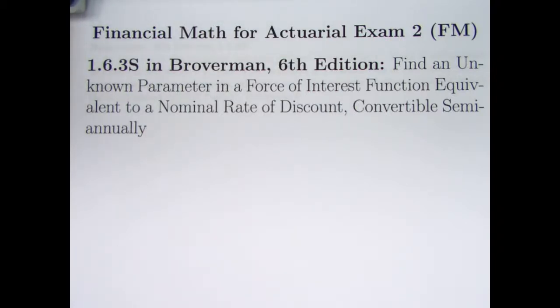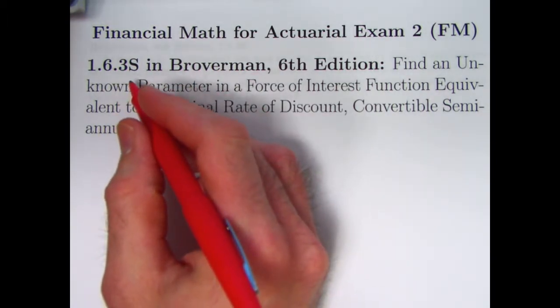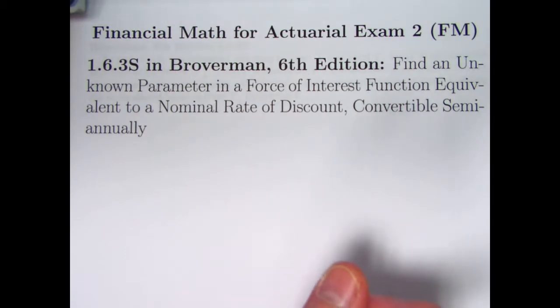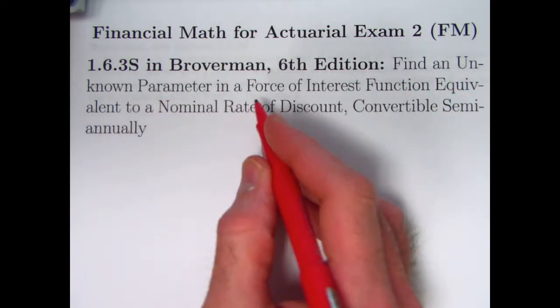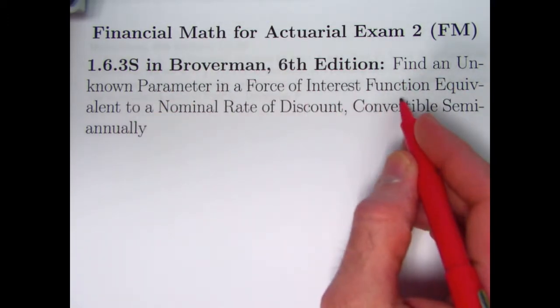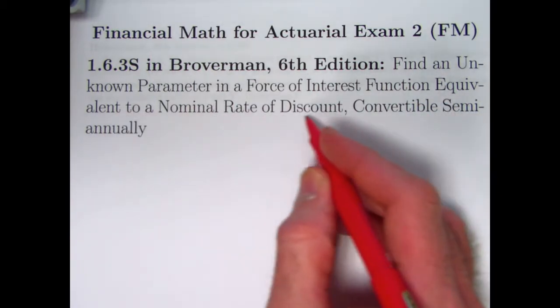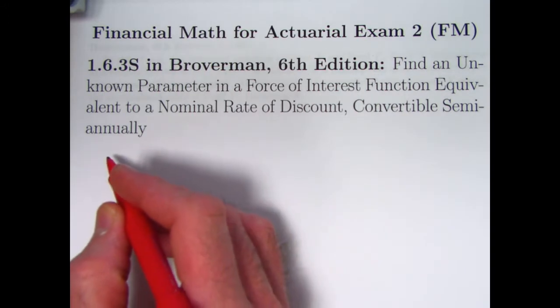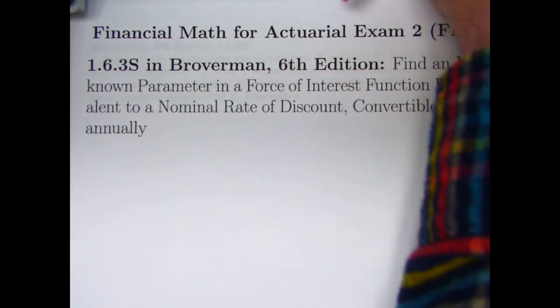Hi, this is the 17th video on helping people study for actuarial exam 2 on financial math. We're going to look at problem 1.6.3s in Broverman. In the last video, we introduced the idea of a force of interest. We're going to continue with that in this video. I should emphasize before we look at the problem that that is only equivalent at a certain moment in time, not for all time.